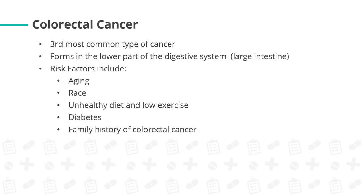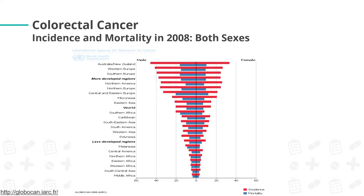Finally, colorectal cancer is the third most common type of cancer. It forms in the lower part of the digestive system, specifically in the large intestine. Risk factors include age, race, unhealthy diet and low exercise, diabetes, and family history of colorectal cancer or genetics. Australia or New Zealand has the highest incidence rate of colorectal cancer for both male and female.